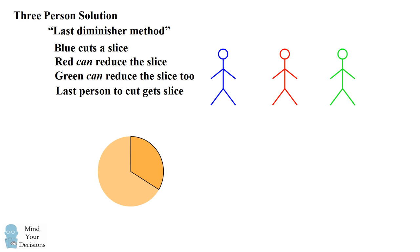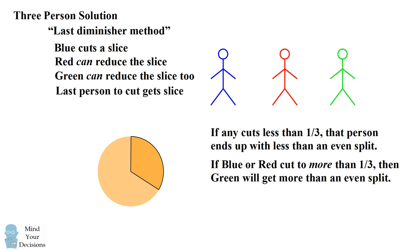Now the last person who cuts the slice is the one who's going to get that slice. So what is that going to do with the incentives when we look at how blue and red are going to cut the cake? Well, if blue or red actually make a cut to less than one-third, then blue or red, no one's going to want to cut the cake after that. So the person who cuts it to less than one-third is going to end up with less than an even split. So no one's going to want to make the slice too small to begin with. But on the other hand, blue or red are not going to want to leave more than one-third. Because if they leave more than one-third, then green is just going to cut a very sliver of a slice and then get more than an even split.